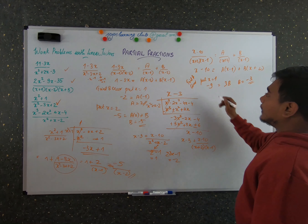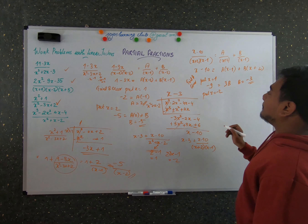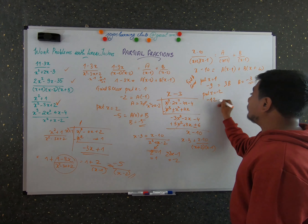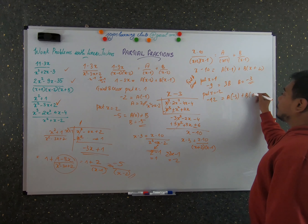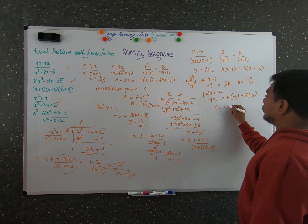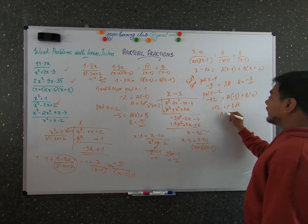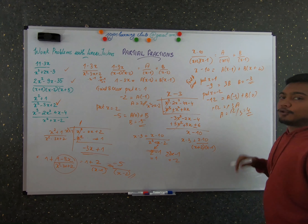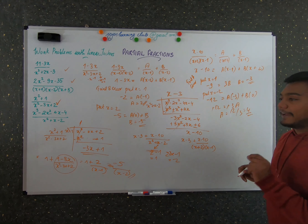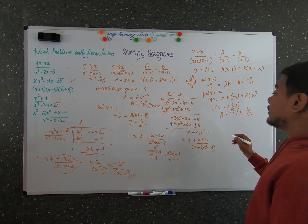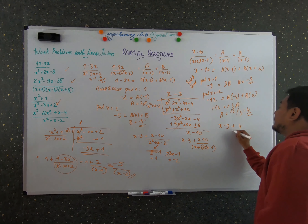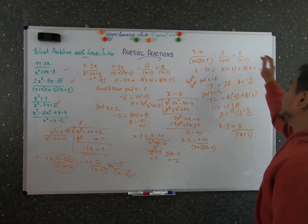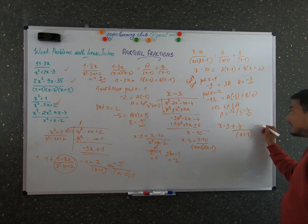Now put x equals minus 2: minus 2 minus 10 is minus 12, and (minus 2 minus 1) is minus 3, so minus 3A equals minus 12, meaning A equals 4. So A equals 4 and B equals minus 3. The final answer for this polynomial expression is x minus 3 plus 4 by (x plus 2) minus 3 by (x minus 1).